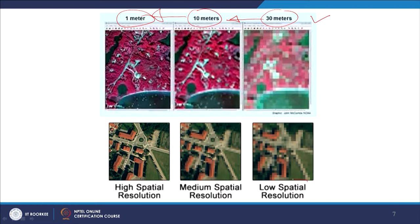Moving from 30-meter to 10-meter spatial resolution makes things more interpretable, and at 1-meter resolution things are very clear. The resolving power is much higher at 1 meter compared to 30 meters. Terms like low, medium, and high resolution are relative — spatial resolution is always discussed in relative terms. No single spatial resolution is the highest or poorest; for example, remote sensing images are available at 30-centimeter resolution, while 1-kilometer resolution images are also extensively used for different applications.